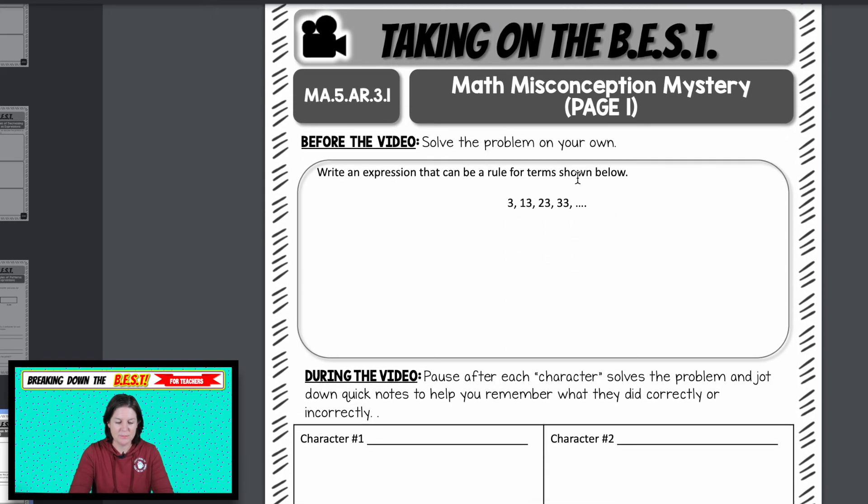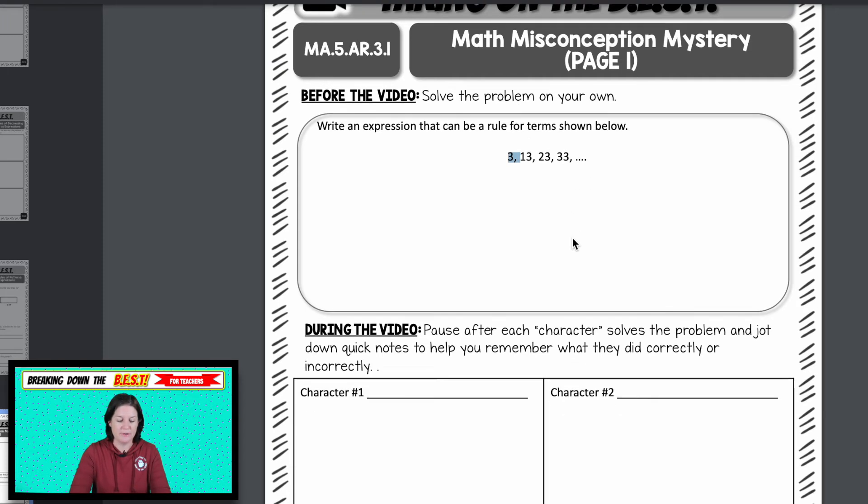Finally, we have the math misconception mystery, which I need to change this. The problem itself has this three taken away, just so you know, and it's just 13, 23 and 33. I will go in there and fix that. So by the time you see this, hopefully it has been fixed. Unless you have the workbook, you might just need to cross that part out.